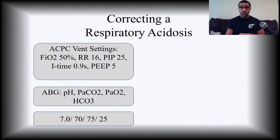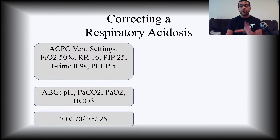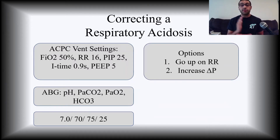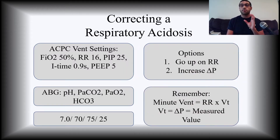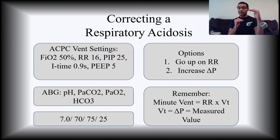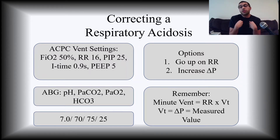Here's a sample problem for correcting a respiratory acidosis. You have a patient on ACPC with FiO2 of 50%, respiratory rate of 16, PIP of 25, I-time of 0.9 seconds, and PEEP of 5. Your ABG comes back as 7.0 / 70 / 75 with a bicarb of 25 — this is a respiratory acidosis. To correct it in ACPC mode, you have two options: increase the respiratory rate or increase the Delta P. Don't forget, minute ventilation is what you're trying to increase, and that equals respiratory rate times tidal volume. In this mode, your tidal volume equals your Delta P, and it will only appear in the measured value section of the vent since we're setting pressure.